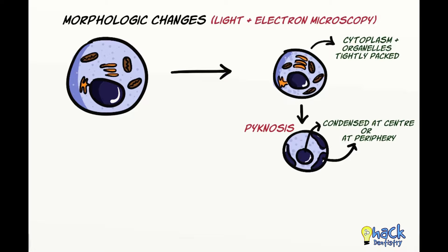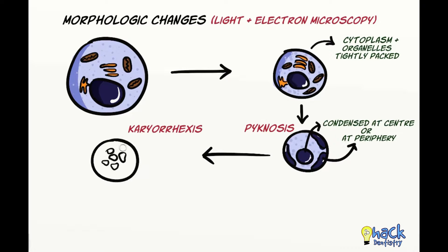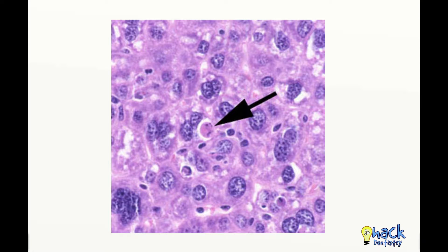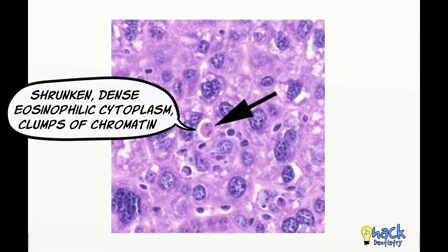Following this, chromatin material undergoes karyorrhexis — that is, it disintegrates and becomes fragmented. Under the microscope, a cell undergoing apoptosis would appear shrunken with dense eosinophilic cytoplasm and small clumps of hematoxylinophilic chromatin material.